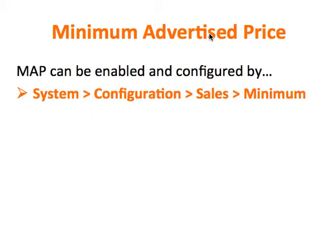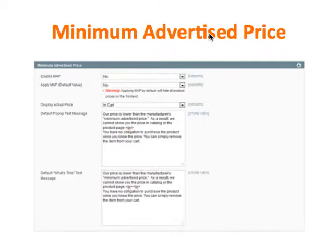Your MAP, or Minimum Advertised Price, can be enabled and configured by going to System, then Configuration, click on Sales, and go over to Minimum Advertised Price. The first field is the Enable Map field — you're going to want to change that to Yes in order to enable MAP.